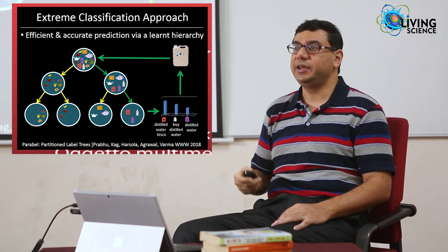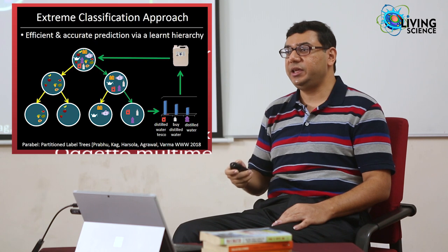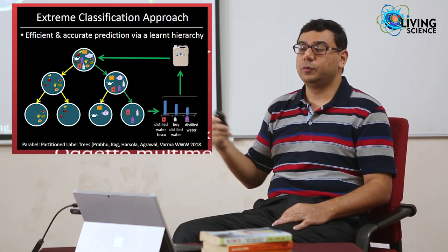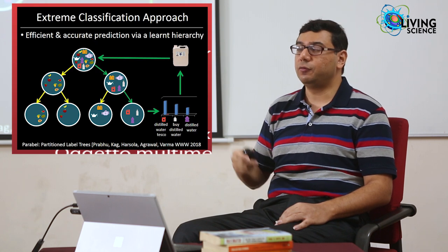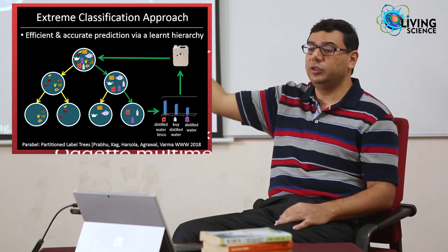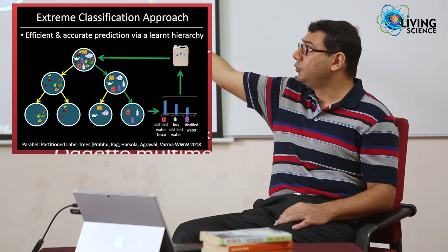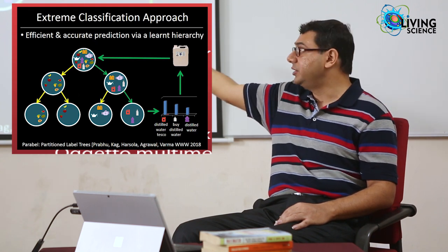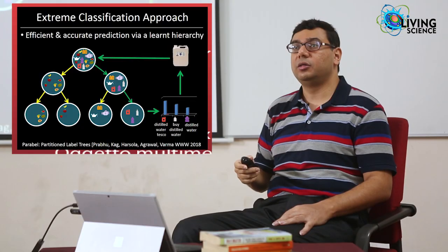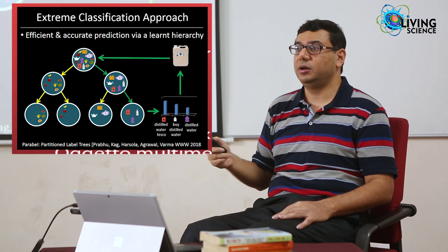In extreme classification we embrace the complexity of the problem by testing each ad against all 10 million queries. We learn a hierarchy over the space of queries: all 10 million are at the root, then fruit-related queries go left and distilled-water and engine-oil queries go right, and so on. When an ad comes in, you walk it down the tree in logarithmic time — in milliseconds — and accurately predict all the distilled water queries even though they might not appear as text on the ad itself.